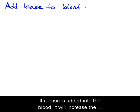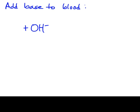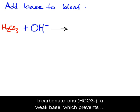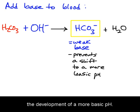If a base is added into the blood, it will increase the concentration of hydroxide ions (OH). Carbonic acid will react with the hydroxide ions, forming more bicarbonate ions (HCO3), a weak base, which prevents the development of a more basic pH.